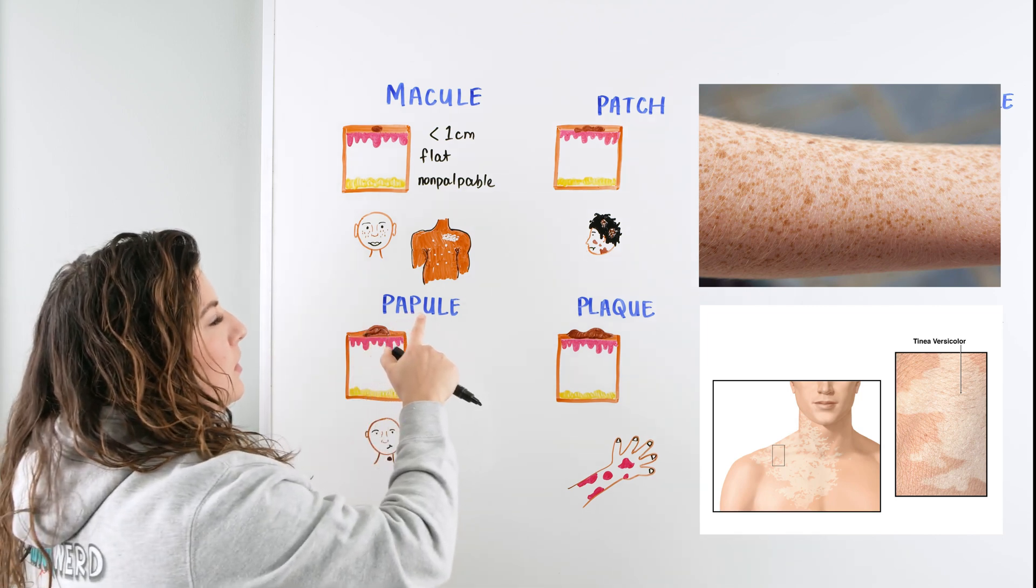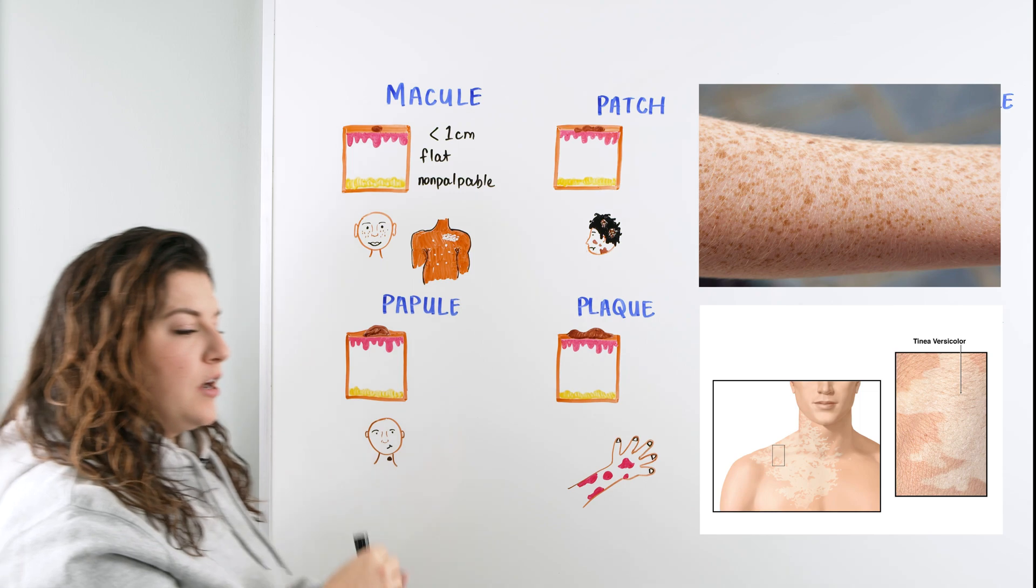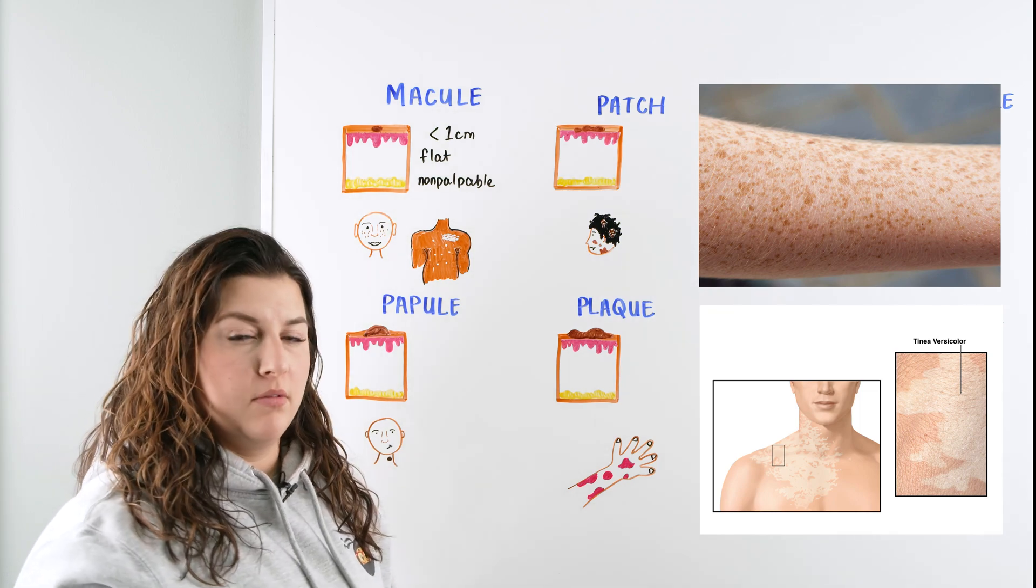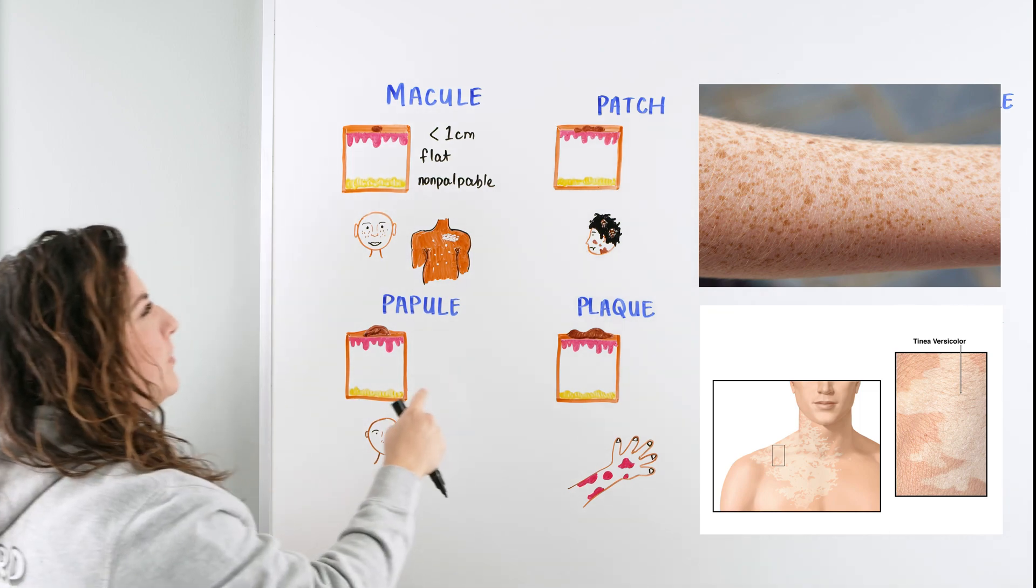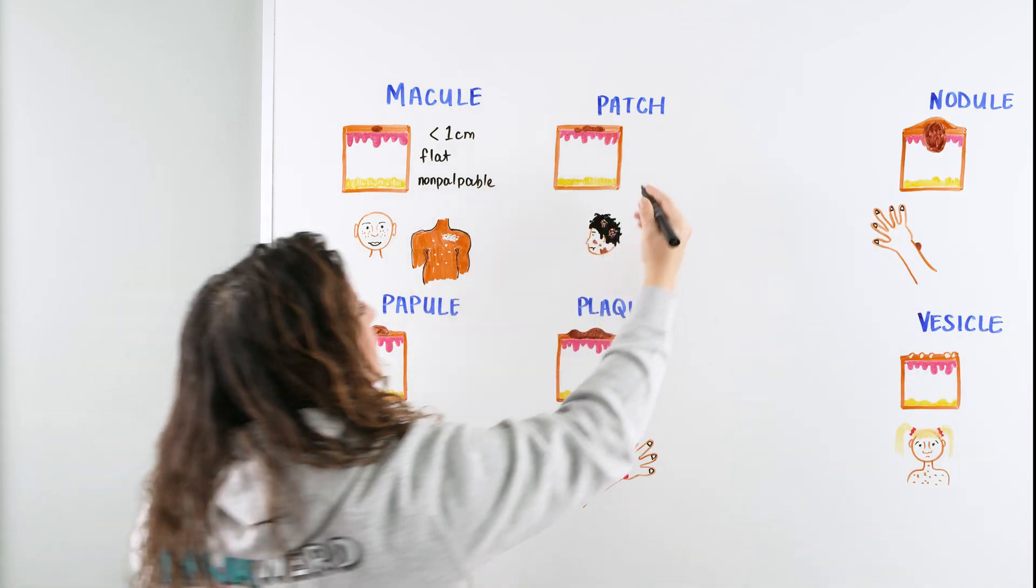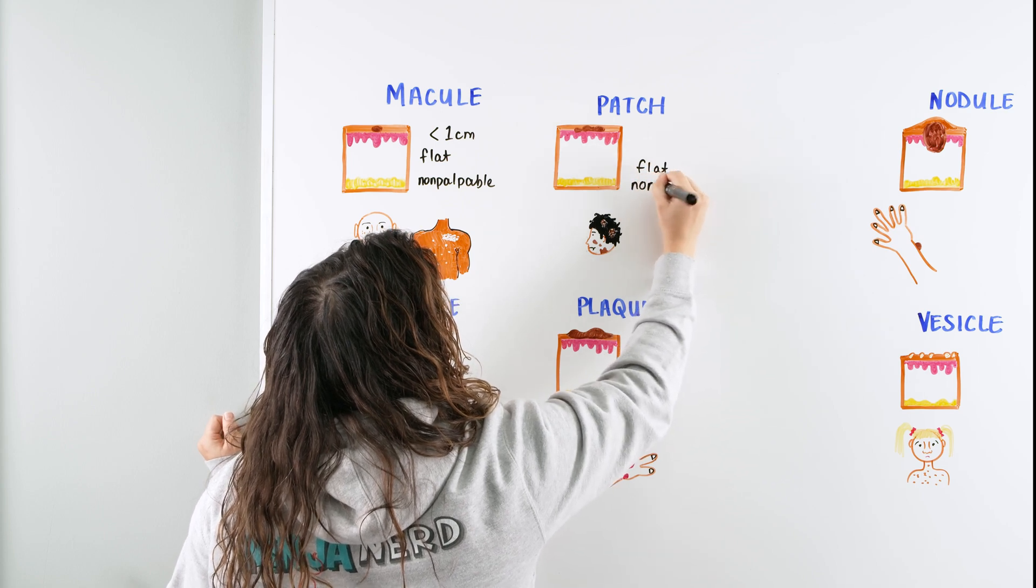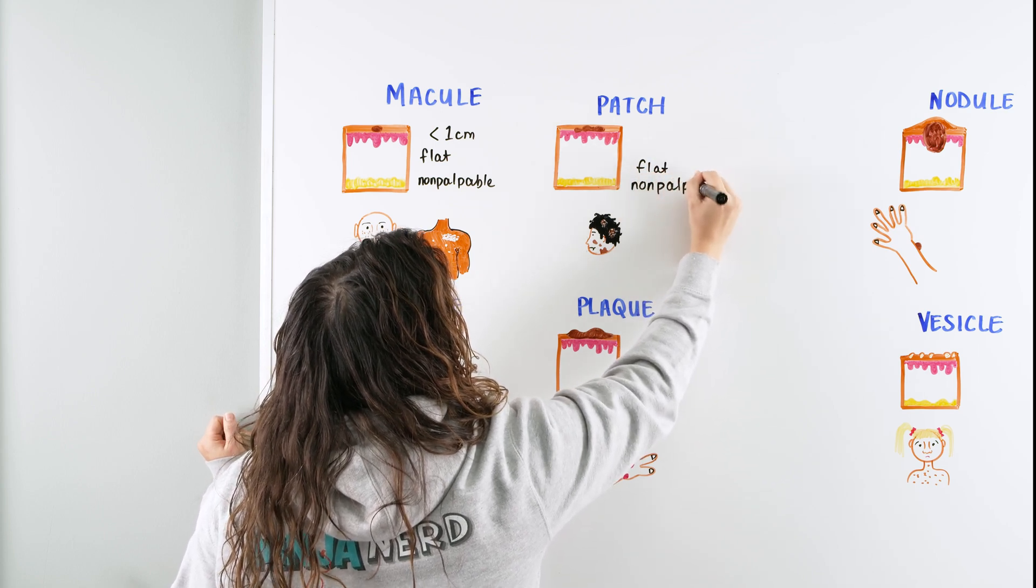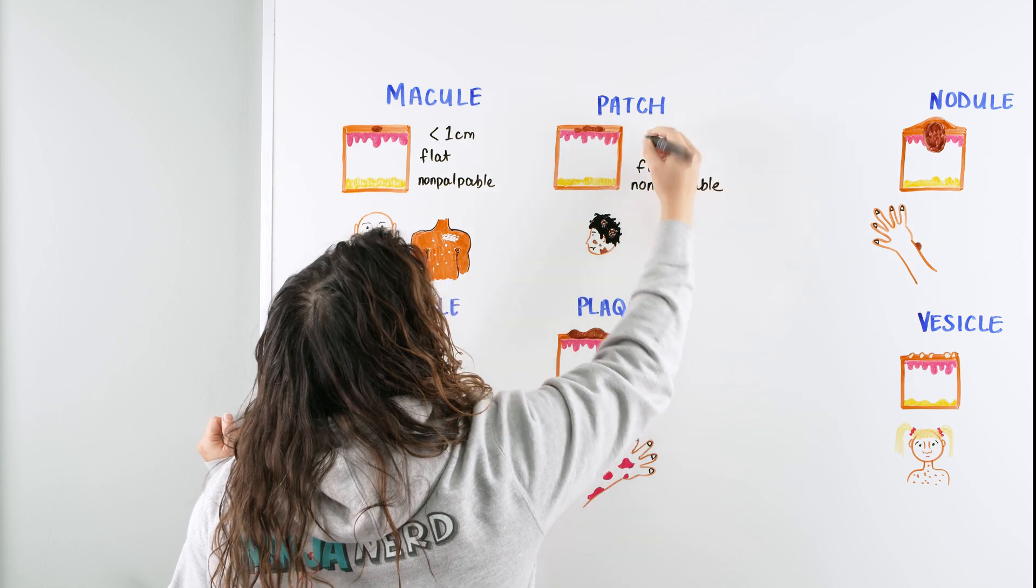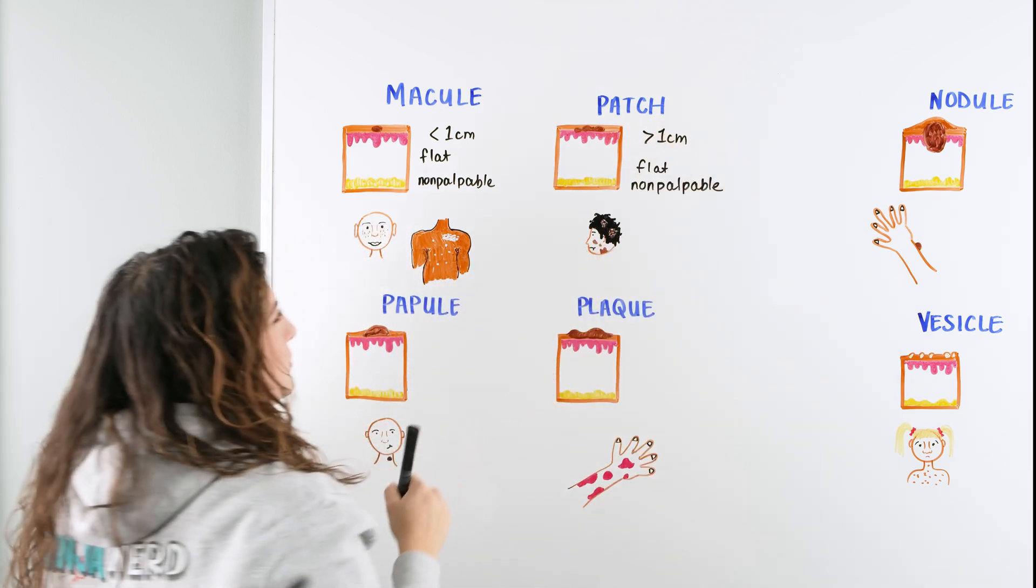What that means is that if we were going to assess this patient and for whatever reason we wanted to close our eyes and just feel over the top to see if we could feel a bump and we didn't, that would be non-palpable, meaning this is nice and flat on the surface of the skin. It's less than one centimeter and it's circumscribed. It has a really nice formation or clear definition of what the outside of the border is. Some examples would be things like freckles or tinea versicolor where we can see some changes within the skin.